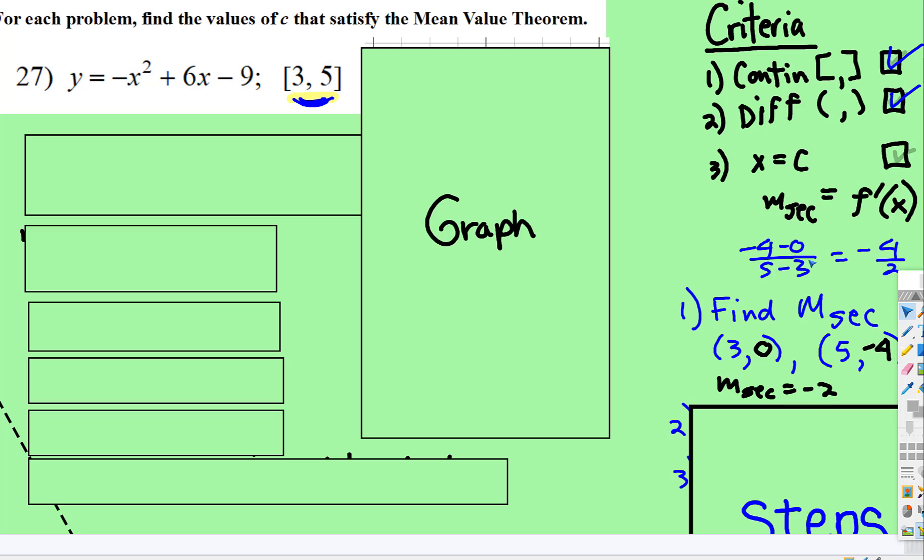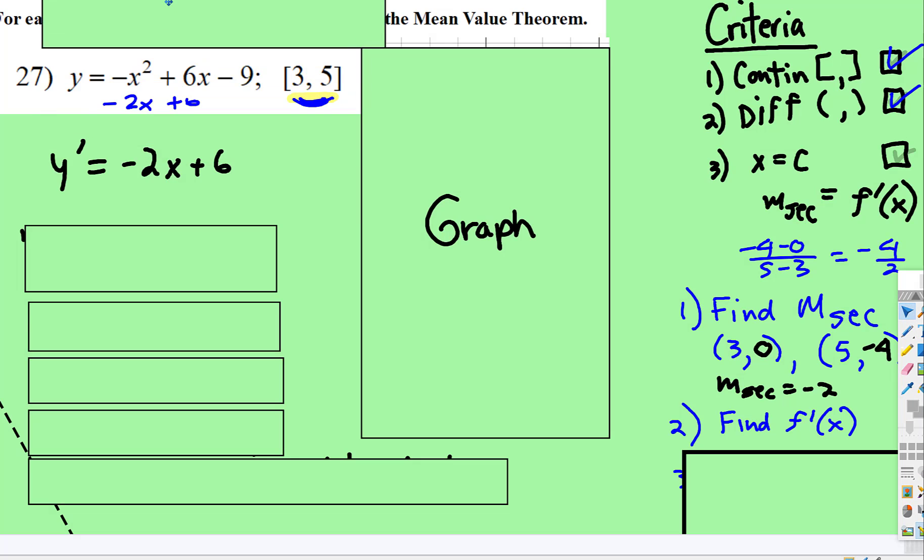Then you're going to set -2 equal to the derivative. So we have to find the derivative of this function. The derivative of that function: the 2 would come down, that would be -2x. And the derivative of a linear is just the slope. So we have that right there.